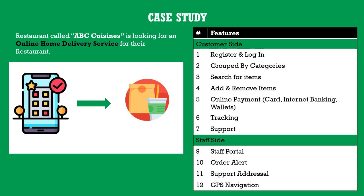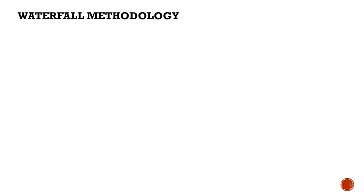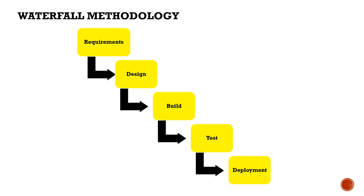Let's see how these features would be delivered first in the waterfall model, and then in the agile model, before looking at the differences. As you can see in the diagram, the waterfall methodology is a top-down approach with phases: requirements, design, build, test, and deployment. It flows unidirectionally — there's no way to loop back, which is one of its key constraints.